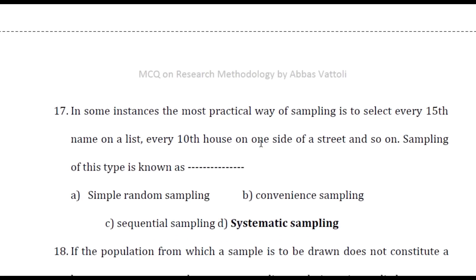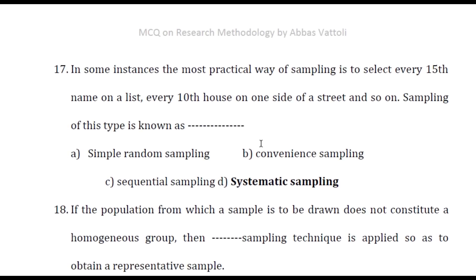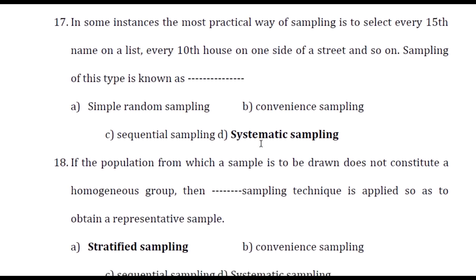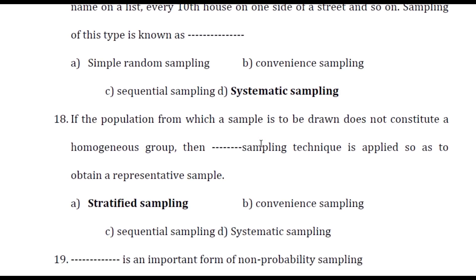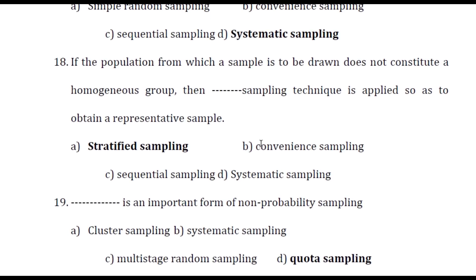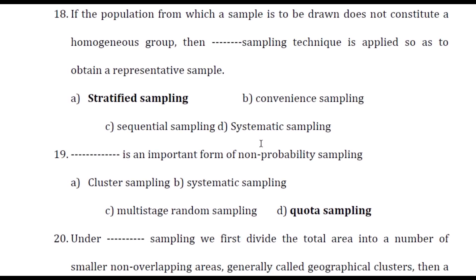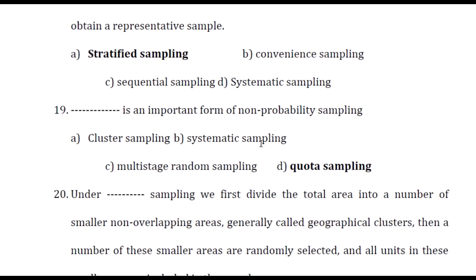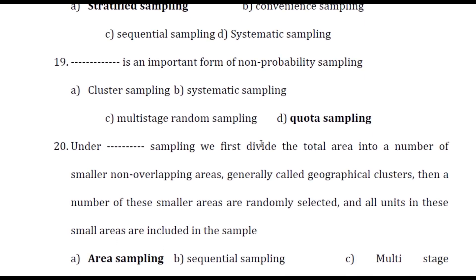In some instances the most practical way of sampling is to select every 15th name on a list or every 10th house on one side of the street — sampling of this type is known as systematic sampling. If the population from which a sample is to be drawn does not constitute a homogeneous group, then stratified sampling technique is applied to obtain a representative sample. Quota sampling is an important form of non-probability sampling.